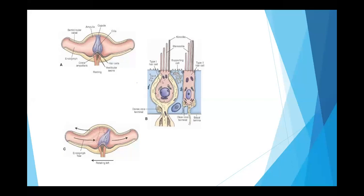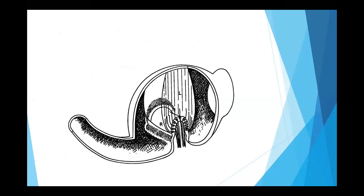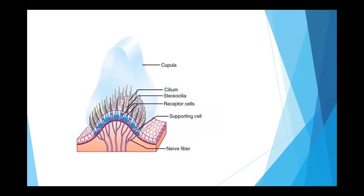Inside the jelly you have the hair cells. Looking at a closer view, the cupola is the gelatinous structure, and the crista — also called crista ampullaris because it is inside the ampulla — contains embedded hair cells. The cupola sits on top of the crista. We can appreciate how the hair cells are sitting inside the cupola.